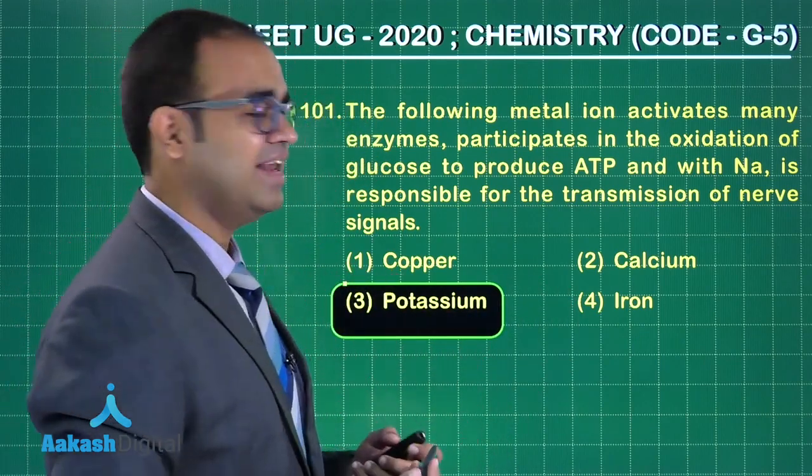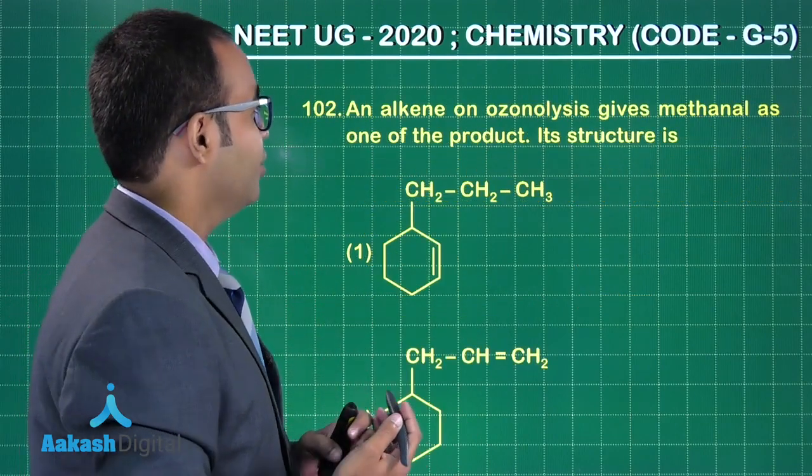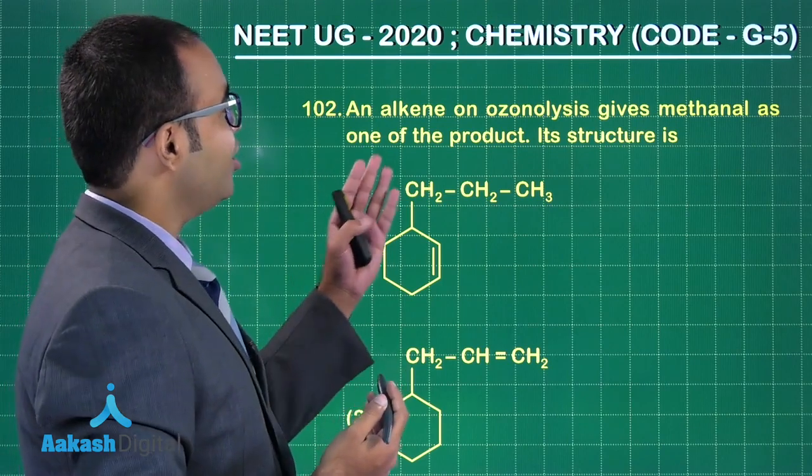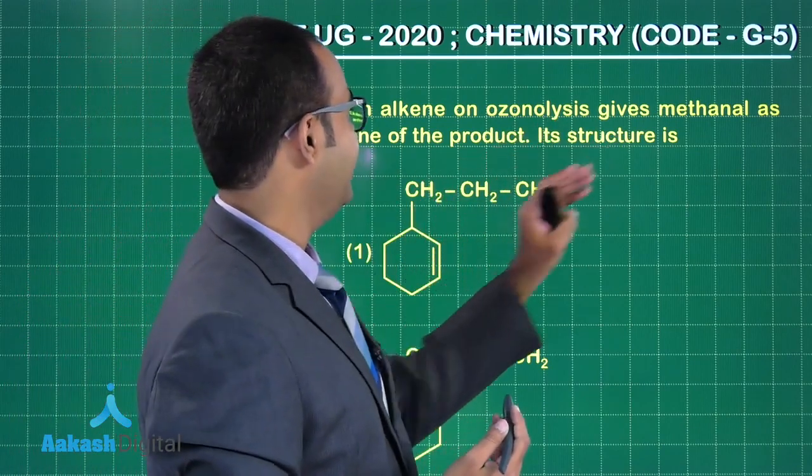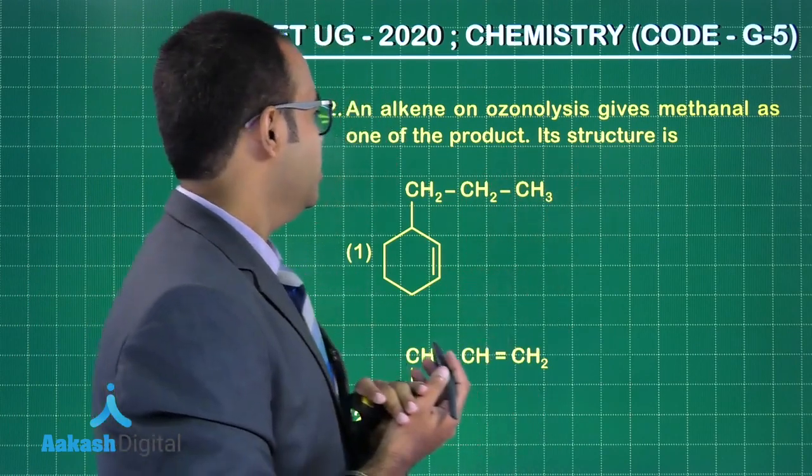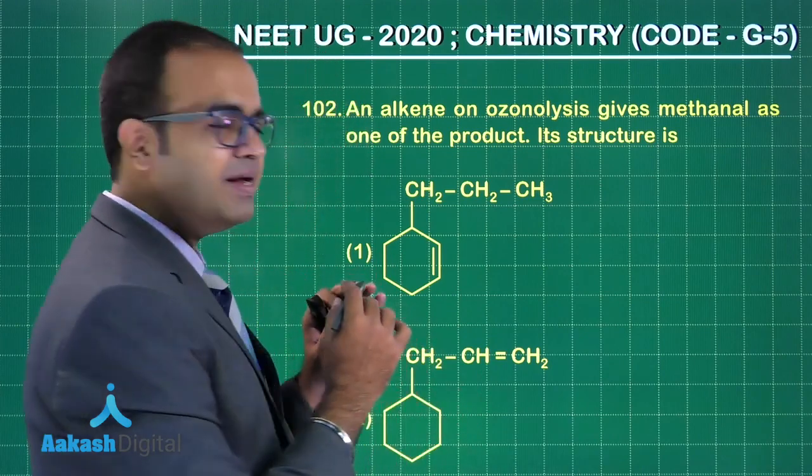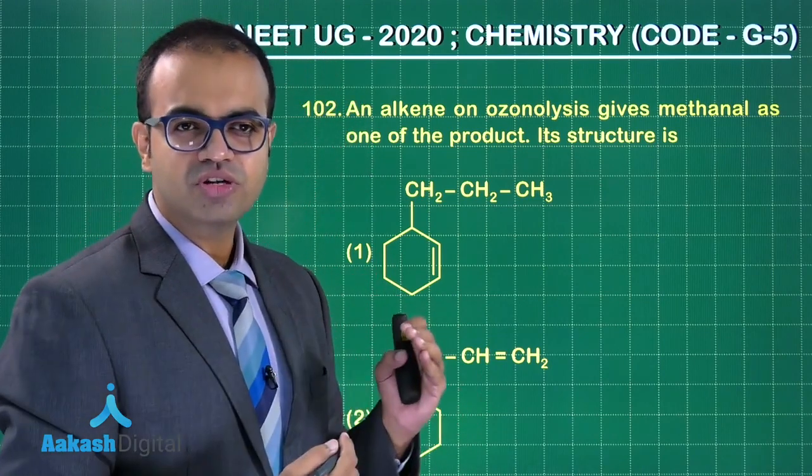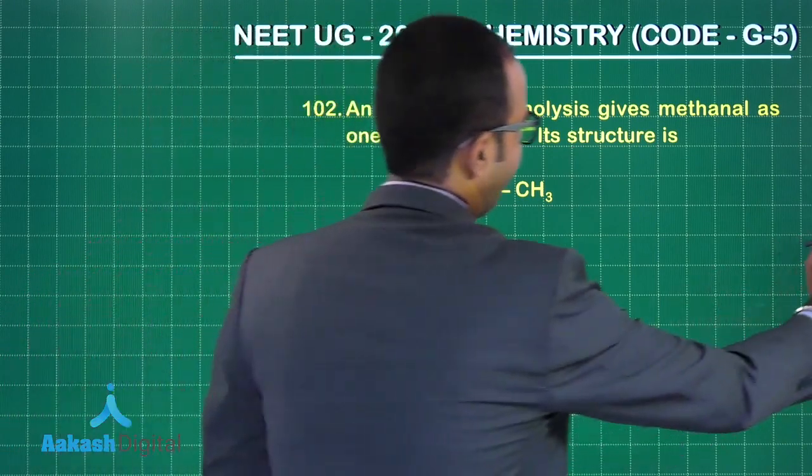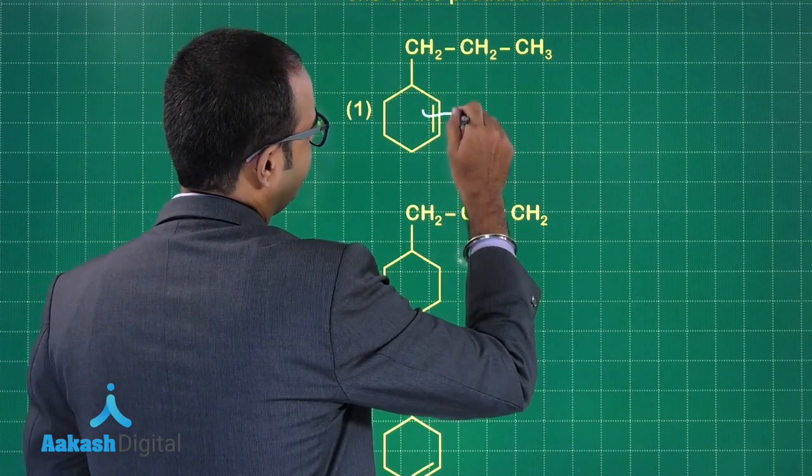Let us look at the next question. Question from organic chemistry. An alkenone ozonolysis gives methanol as one of the products, its structure is. No need to write down the reaction. Very simply what you can do is you can just break the double bond, put oxygens on either side, and you can check the products. What we have, let us look at the first structure. I break the double bond, I put oxygen oxygen. Am I getting a methanol?